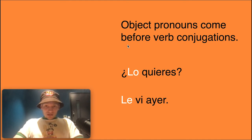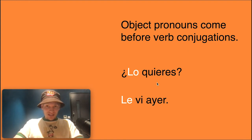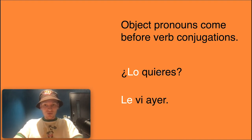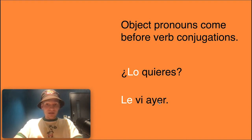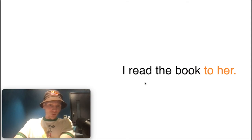A quick note: object pronouns — both direct and indirect — come before verb conjugations. So it's lo quieres, not quieres lo. And for indirect: le vi ayer — 'I saw her or him yesterday' in the preterite. They come before the conjugated verb. You'll see more examples of that now.